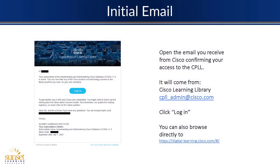Starting from the beginning, we will look for an initial email, whether you purchase access to a digital course yourself or you're working through a Cisco Learning Partner. Once you've been granted access to the course, you'll probably see that email show up with the course name and a login button. If you click that login button, that will redirect you to the digital learning website, or you can just browse directly to digital-learning.cisco.com.